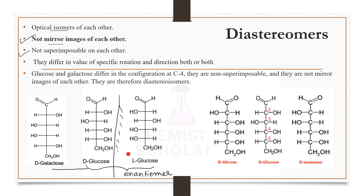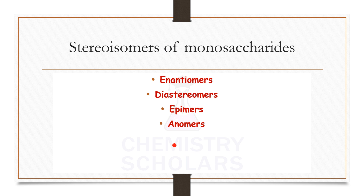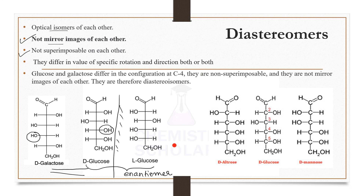Comparing D-galactose and D-glucose, you can clearly see that they differ at the fourth carbon atom. Since they are not mirror images of each other but are still stereoisomers, these are diastereomers. The D-series sugars shown on screen are all diastereomers of each other, while the L-series is exactly a mirror image of the D-series and hence enantiomers. So the D-series monosaccharides you see on screen are examples of diastereomers.